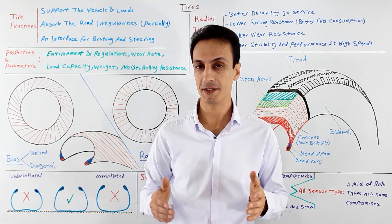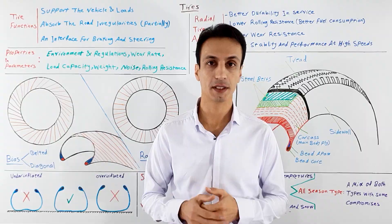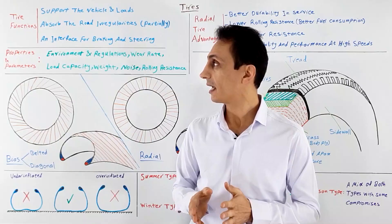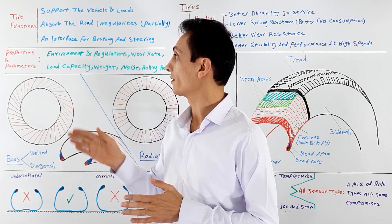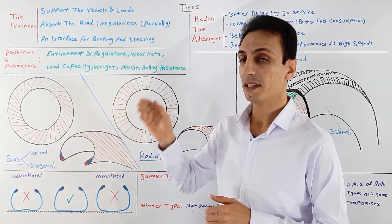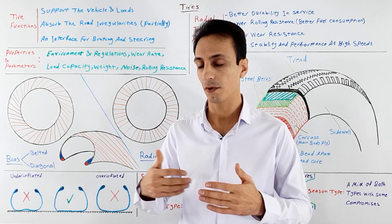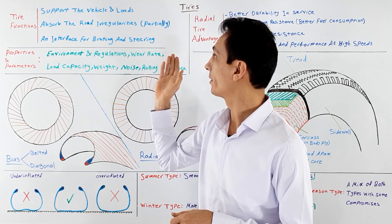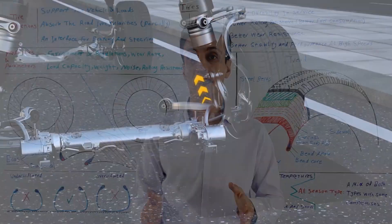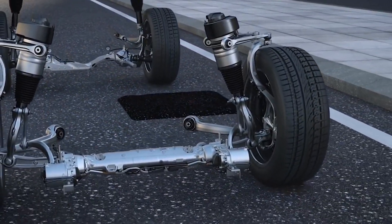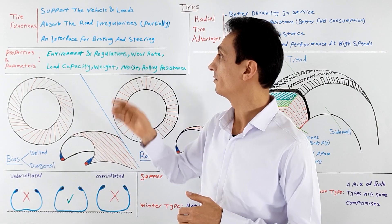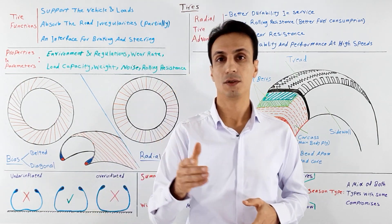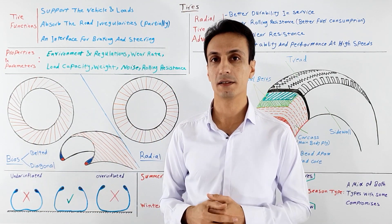Hello there, welcome to my channel. My name is Anayeti and today I'm going to talk about an introduction to tires. As you probably know, tires have three main functions on your car: they support the vehicle and the loads, they allow you to go forward and backward since they can roll, they absorb road irregularities (partially, since the suspension system is the main player for this), and they provide an interface for braking, steering, and maneuvering on the road.